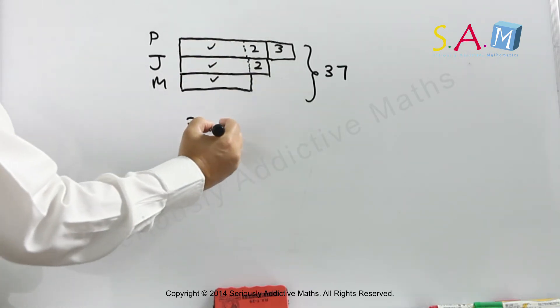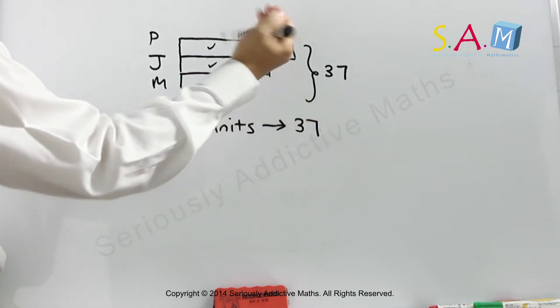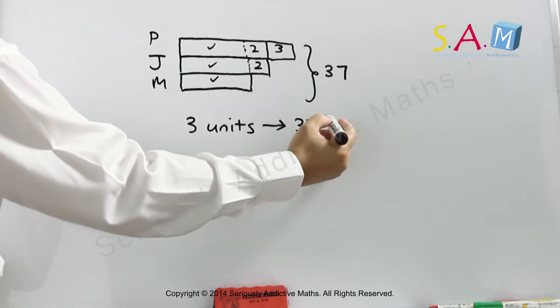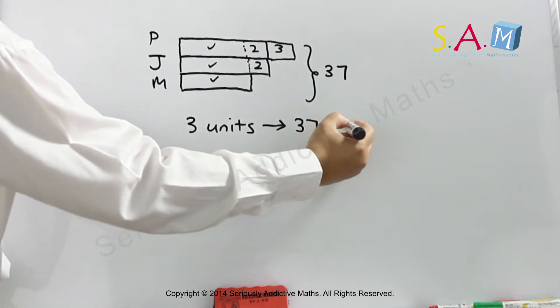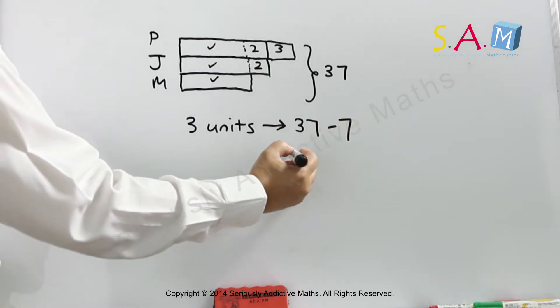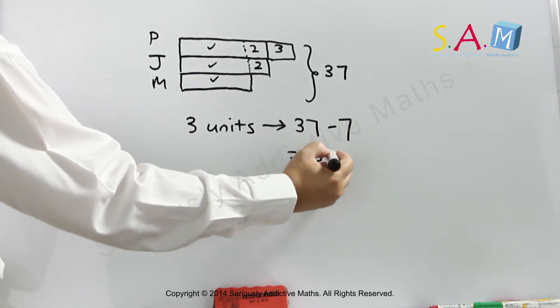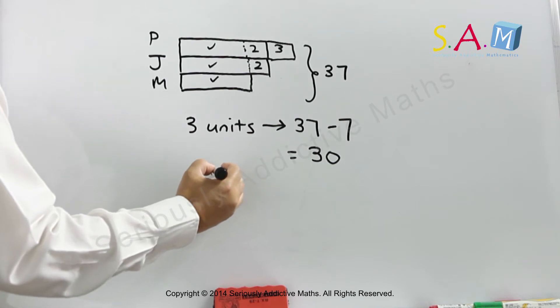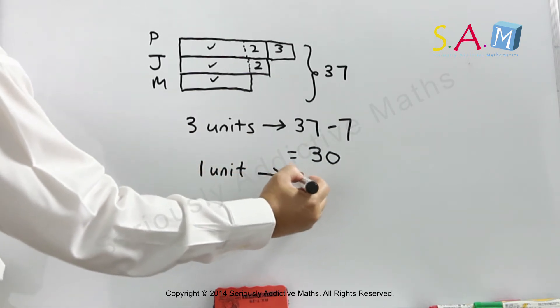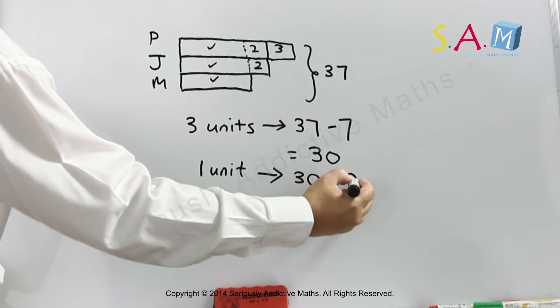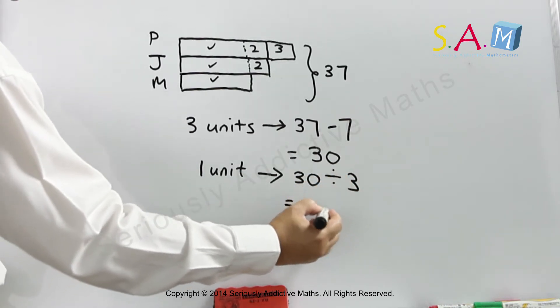So we have three units equal to, we cover these up, that will be take away seven, and that will be 30. So one unit is 30 divided by three, which is 10.